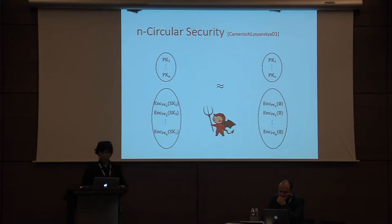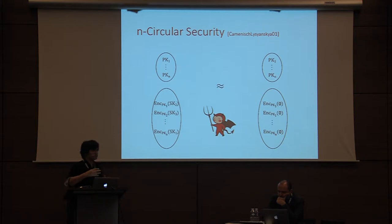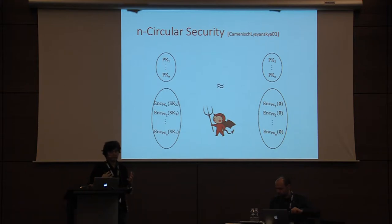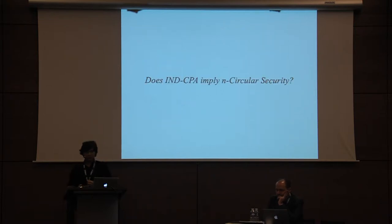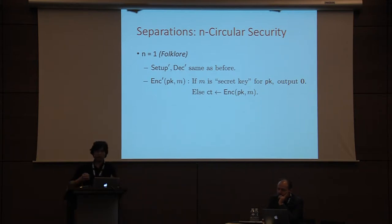A very natural question you might ask is: does n-CPA security imply n-circular security? Or is n-circular security something stronger that requires new techniques to achieve? We already have a couple of separations for n-circular security. The most common one is for n equals one, when you have a self-cycle.